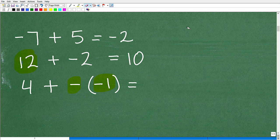So in this scenario, I can just rewrite this as four plus the opposite of a negative one is just one. And of course, four plus one is five. So this is adding positive and negative numbers.